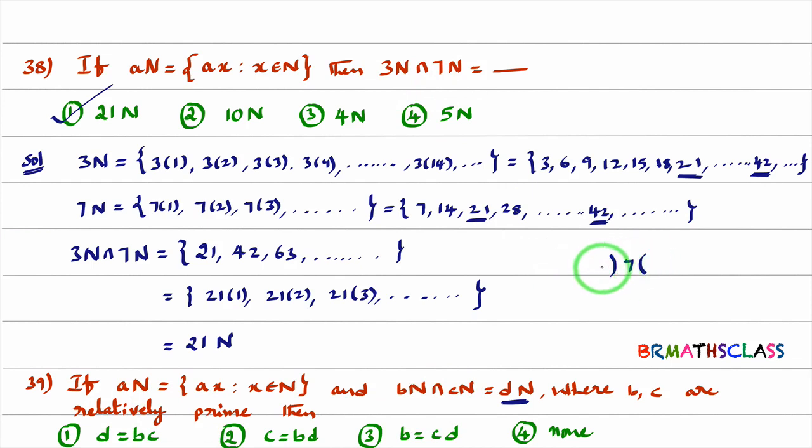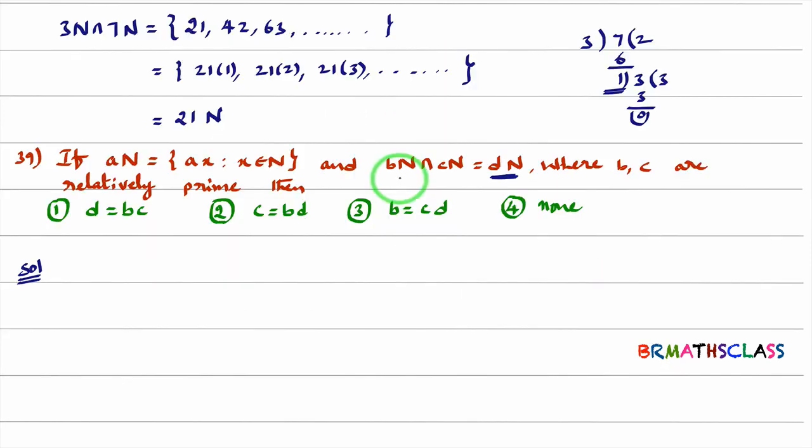You just divide bigger number by smaller number. This 3 in this 7, 2 times. 3 times 2 is 6. 7 minus 6 is 1. Again, you divide this 3 with 1. 3 times 1 is 3. So the GCD will be 1. If GCD of 3, 7 is 1, we say that 3, 7 are relatively prime. Just now we came to know that 3N intersection 7N is 21N. 3 and 7 are relatively prime.